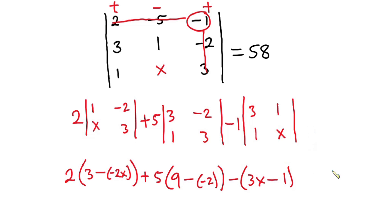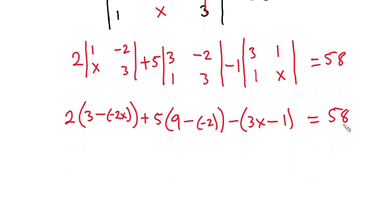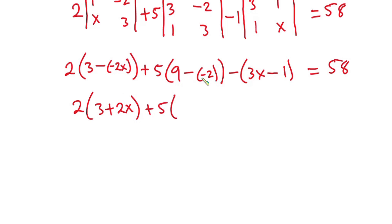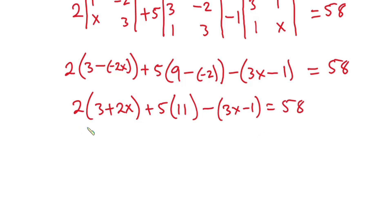And this is all equal to 58 — don't forget the 58. Let's simplify the brackets first. We have 2 into (3 minus negative 2x), which is 2 into (3 plus 2x). Then plus 5 times (9 minus negative 2), which is 5 times 11. Then minus (3x minus 1). This equals 58.